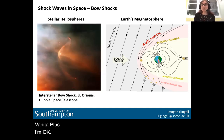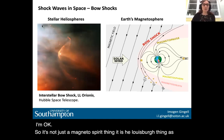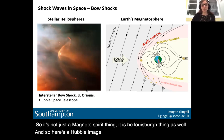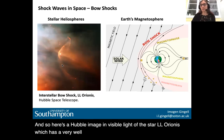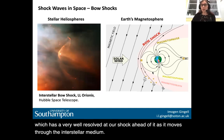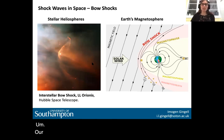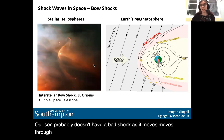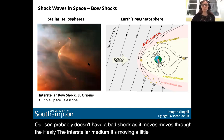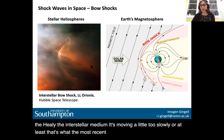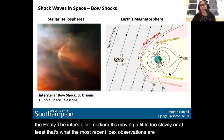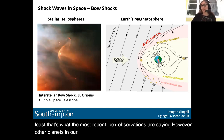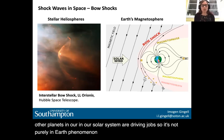Moving through the solar wind faster than the magnetosonic speed, planets drive a bow shock from their magnetopause. It's not just a magnetospheric thing but a heliospheric thing as well. Here is a Hubble image in visible light of the star LL Orionis, which has a very well-resolved bow shock ahead of it as it moves through the interstellar medium. Our Sun probably doesn't have a bow shock as it moves through the interstellar medium — it's moving a little too slowly, according to the most recent IBEX observations — but all the planets in our solar system are driving bow shocks, making Earth the best laboratory we have.